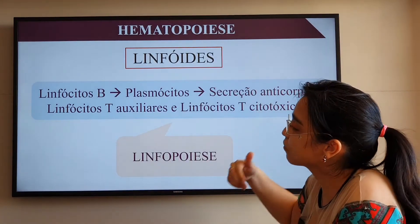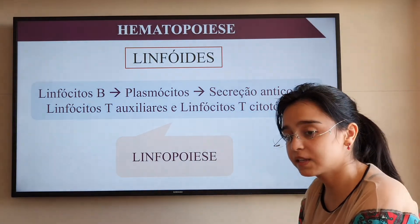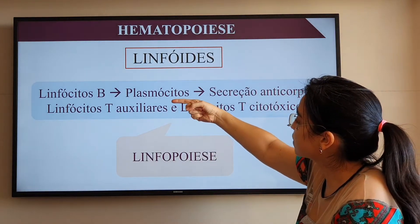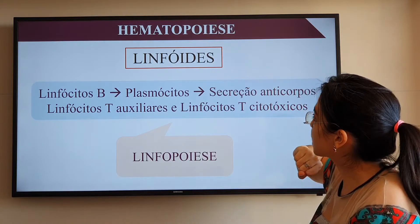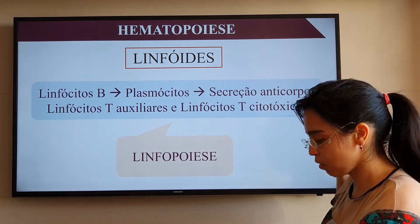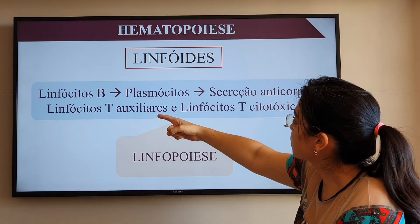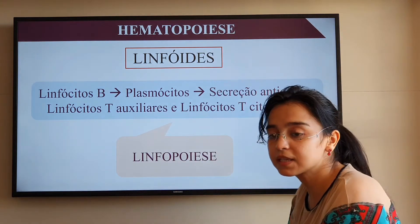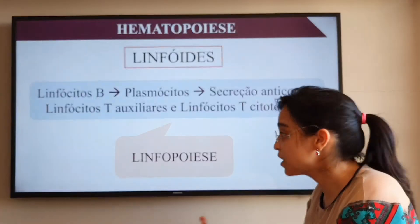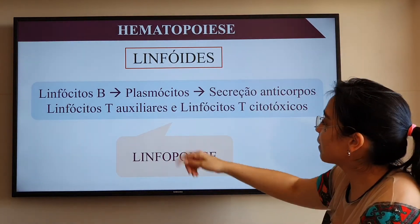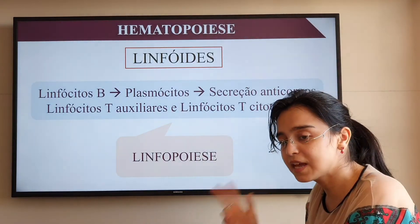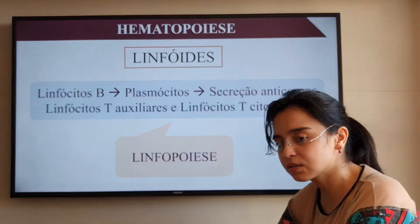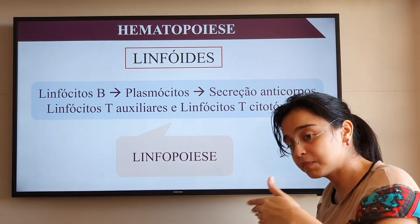Já as células indiferenciadas linfoides vão dar origem aos linfócitos B — que podem se diferenciar em plasmócitos que realizam a secreção de anticorpos — e aos linfócitos T auxiliares, linfócitos T citotóxicos, além das células natural killers (células NK). O processo de formação desses linfócitos B, T e células NK é chamado de linfopoiese.